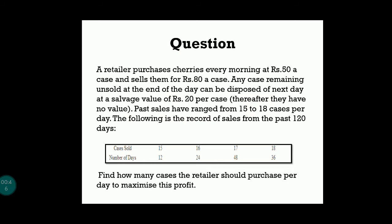To clarify: the retailer purchases boxes of cherries for rupees 50 each and sells them for rupees 80, giving a profit of rupees 30 per box. If any boxes are unsold by the end of the day, they get disposed of the next morning at a throwaway price of rupees 20. Since the cost was rupees 50 and the salvage is rupees 20, that represents a loss of rupees 30 per unsold box.